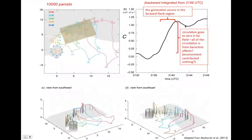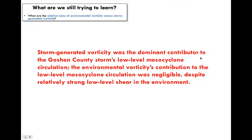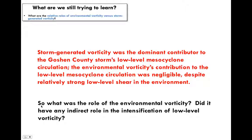The punchline is that the circulation or bulk rotation about this circuit — none of it comes from the environment — which is really surprising because the environment has large shear. Tornadic supercells have even stronger low-level shear on average. But in this case, that environmental vorticity doesn't seem to be playing any direct role in the rotation of the low-level mesocyclone. Storm-generated vorticity appears to be the dominant contributor to the Goshen County storm's low-level mesocyclone circulation, and the environmental vorticity's contribution was negligible, despite the environment having strong low-level shear.